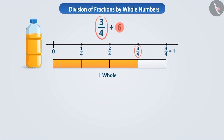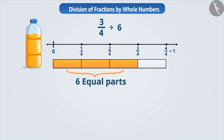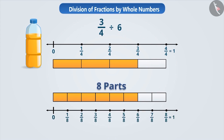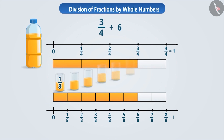These three shaded parts express the fraction three by four. Since three by four litre of juice is to be divided equally among six children, we have to make six equal parts of the shaded portion. We have to divide each part into two equal parts so that the shaded part is divided into six equal parts. Here we have a total of eight parts. Upon dividing the shaded part into six equal parts, we get each part is one-eighth.